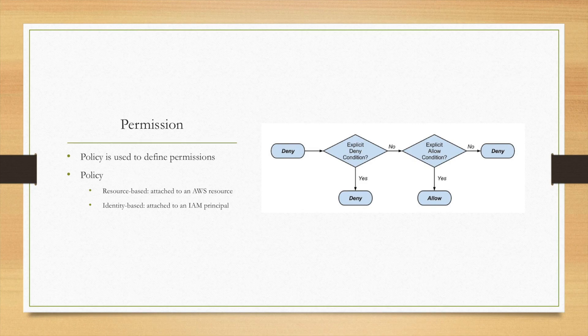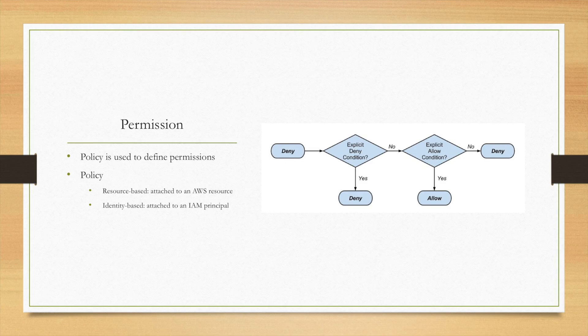To define a policy, we need to know the allow and deny model of AWS. By default, all access is denied — there are no permissions. If there is any explicit deny condition, then you are denied. Otherwise, it will check the policy. If there is any explicit allow condition, then it allows the resource access; otherwise, by default, it is denied.